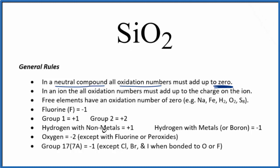We look down our list and find oxygen. Oxygen always has a minus two oxidation number, except when it's bonded to fluorine or in peroxides. So each oxygen here will have a minus two oxidation number.